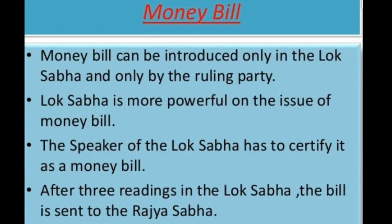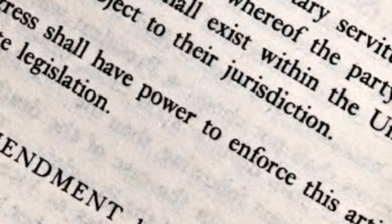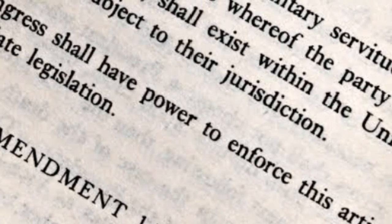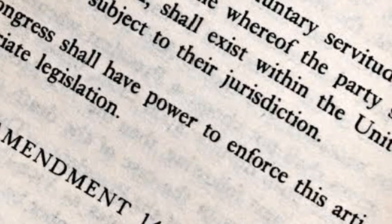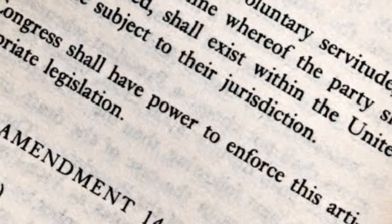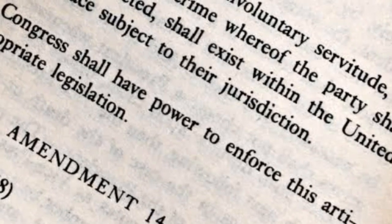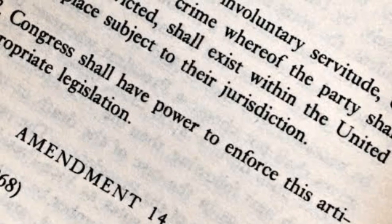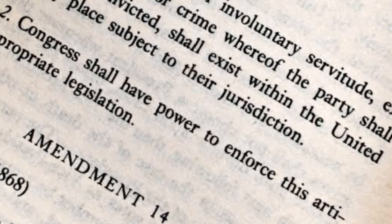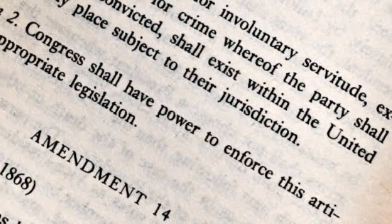This is how an ordinary bill passes through various stages in both houses and becomes a law after the President's signature. Any change in the constitution is called an amendment. The bill to amend or make changes in the constitution requires a special majority in parliament — unlike ordinary laws which require a simple majority. For an amendment, a two-thirds majority of the parliament is necessary.